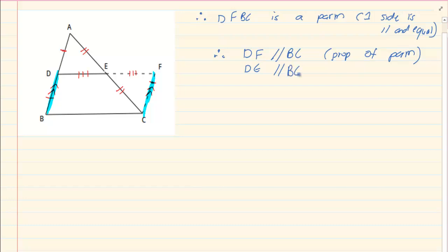Now how do we prove that DE is half of BC? We have got that DF is equal to BC. Why? It is opposite sides of a parallelogram.